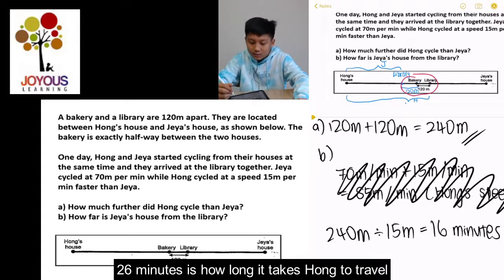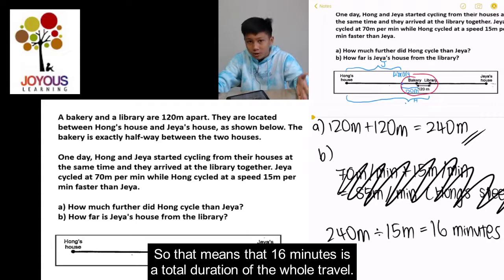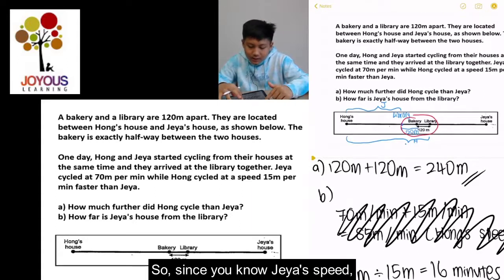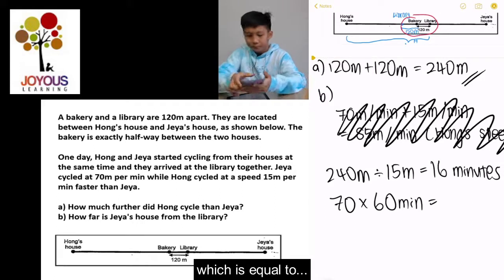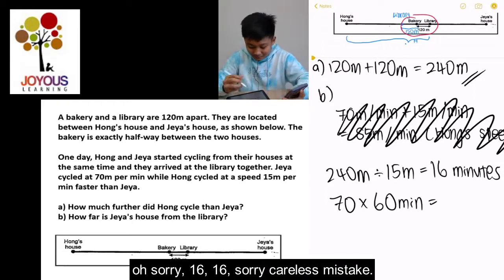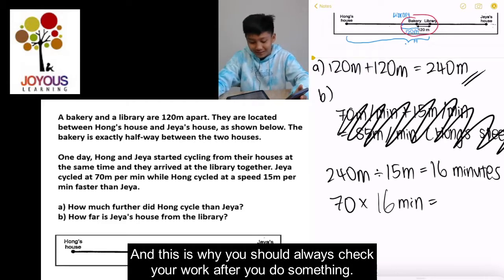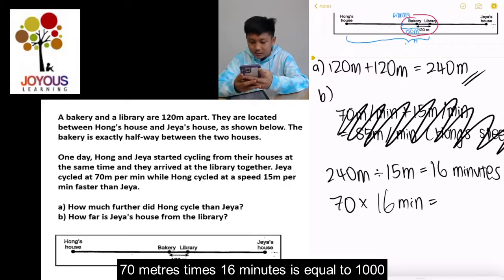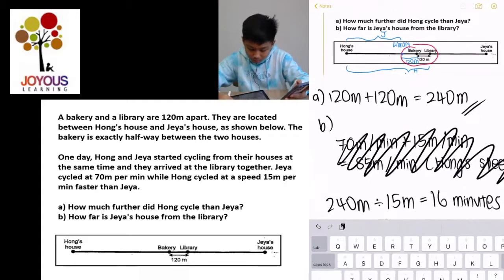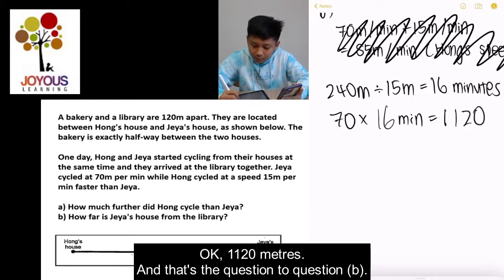16 minutes is how long Hong takes to travel 240 meters more than Jaya, so that means 16 minutes is the total duration of the whole trip. Since we know Jaya's speed is 70 meters per minute, we take 70 times 16 minutes — sorry, it's 16 minutes, not 60! This is why you should always check your work. So 70 meters times 16 minutes equals 1,120 meters. That's the answer for Question B.